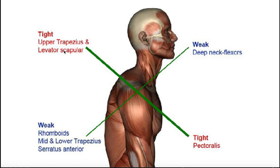If you palpate the upper traps of somebody with upper cross syndrome, they're going to be really tight and probably will have some trigger points that you could potentially dry needle. In contrast, we have two regions of weak muscles: the rhomboids major and minor, middle and lower traps are weak, serratus anterior is also weak, and up here the deep neck flexors are also weak.